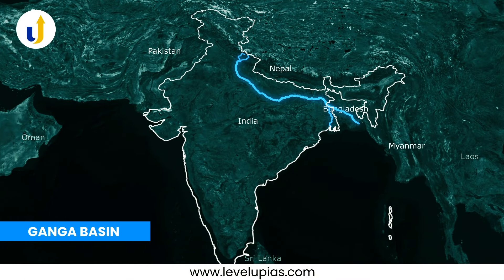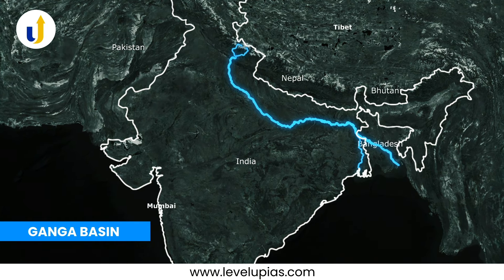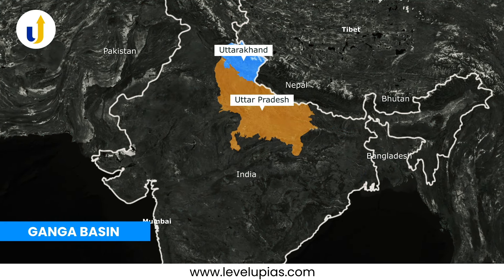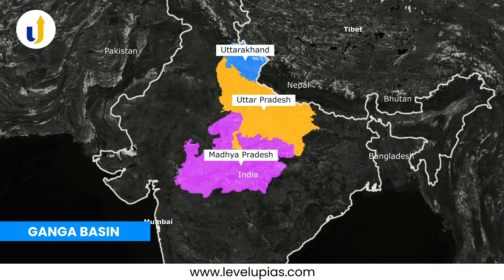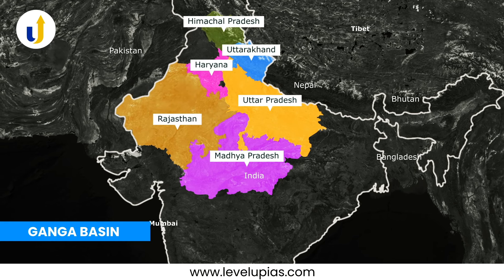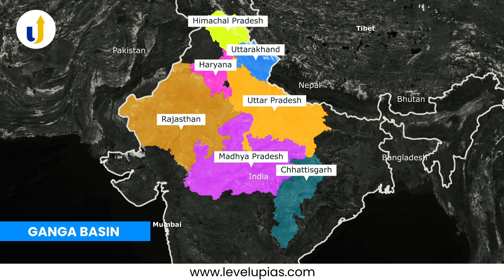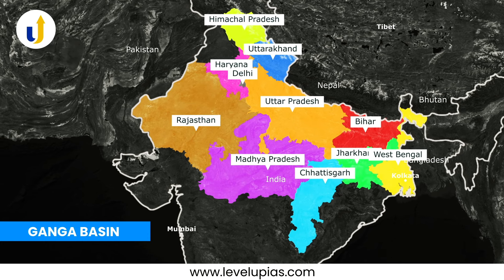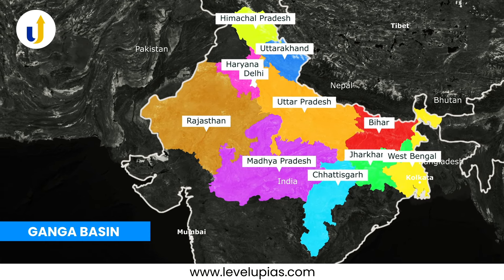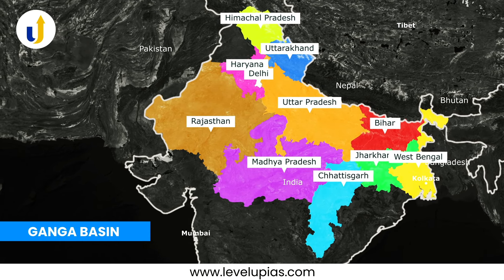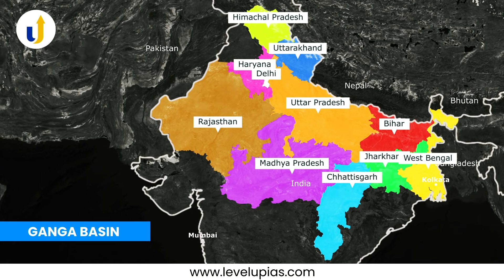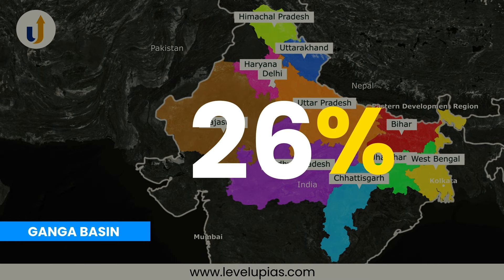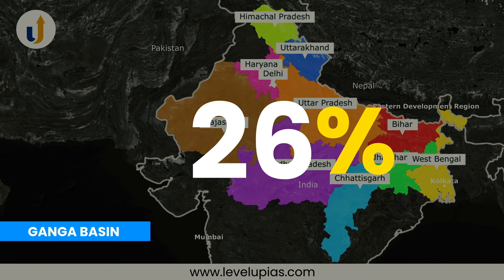The Ganga basin covers 10 states and one union territory, which are Uttarakhand, Uttar Pradesh, Madhya Pradesh, Rajasthan, Haryana, Himachal Pradesh, Chhattisgarh, Jharkhand, Bihar, West Bengal and Delhi. The total Ganga basin is the largest river basin in India in terms of its catchment area, constituting around 26% of the country's land mass.